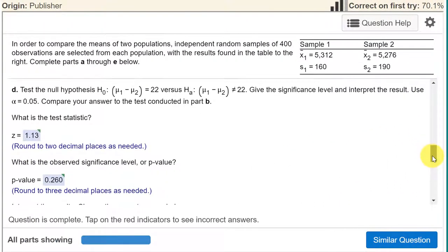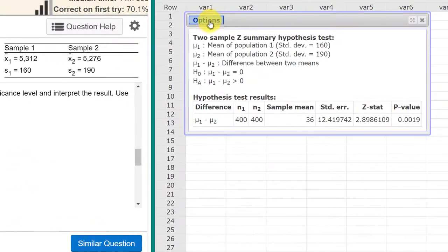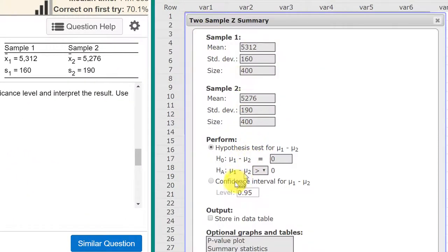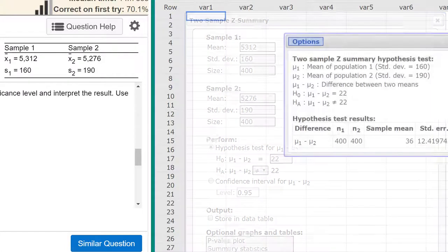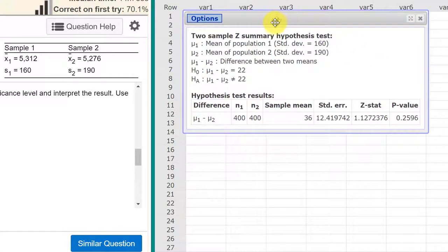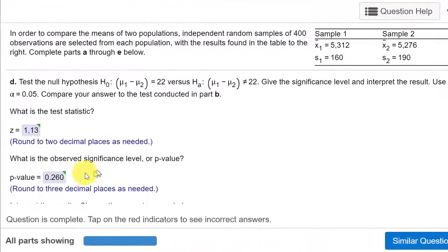Okay. D. Test the null hypothesis mu1 minus mu2 equal 22 versus the alternative not equal to 22. And again, all we need to do is go to edit, because our data doesn't change. And we change our operator here to not equal, and we change our null hypothesis to 22. And we click compute. And so we've got our answers up here, that the test statistic now has changed, because we changed the null value to 22. It's 1.13, which is the answer they want over here. And the p-value is .260, rounding to three decimal places.